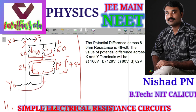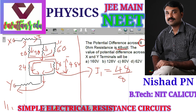The current direction is noted at terminal Y. 48V is the voltage across this 8 ohm resistance. So the current I1 is equal to 48 divided by 8, that is equal to 6 ampere.